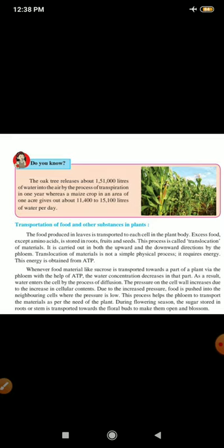During flowering season, the sugar stored in the roots or stem is transported towards the floral buds to make them open and blossom. Now you can understand whenever floral buds are opening, sugar from the roots or stem is taken and is transported there.